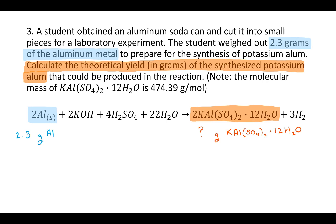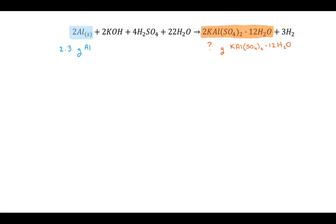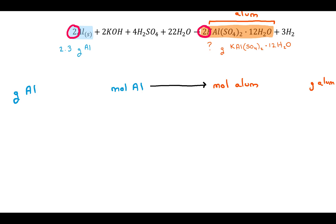So they give you 2.3 grams of aluminum and ask how many grams of potassium alum you would get. Using the balanced chemical equation, we can relate the number of molecules — for every 2 aluminum atoms, you get 2 alum molecules, which is the same as saying for every 2 moles of aluminum, you get 2 moles of alum. You need to get from grams of aluminum to moles of aluminum, then to moles of alum, and finally to grams of alum. Each black arrow represents a conversion requiring a conversion factor.